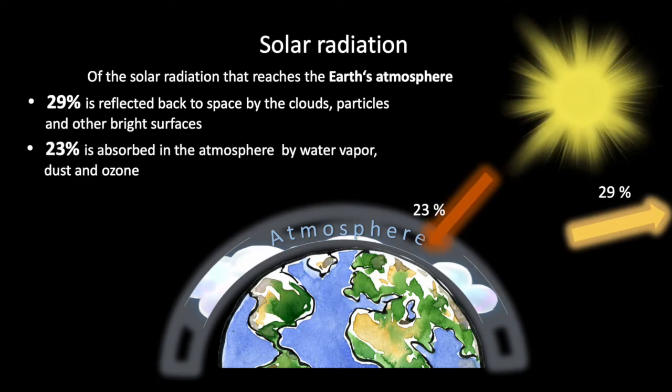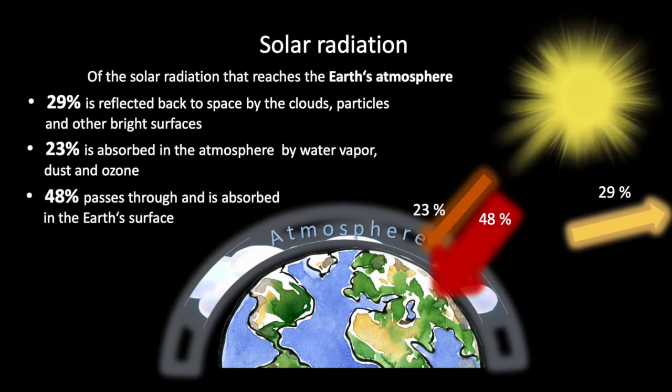23% is absorbed in the atmosphere by water vapor, dust, and ozone, and 48% passes through and is absorbed in the Earth's surface.